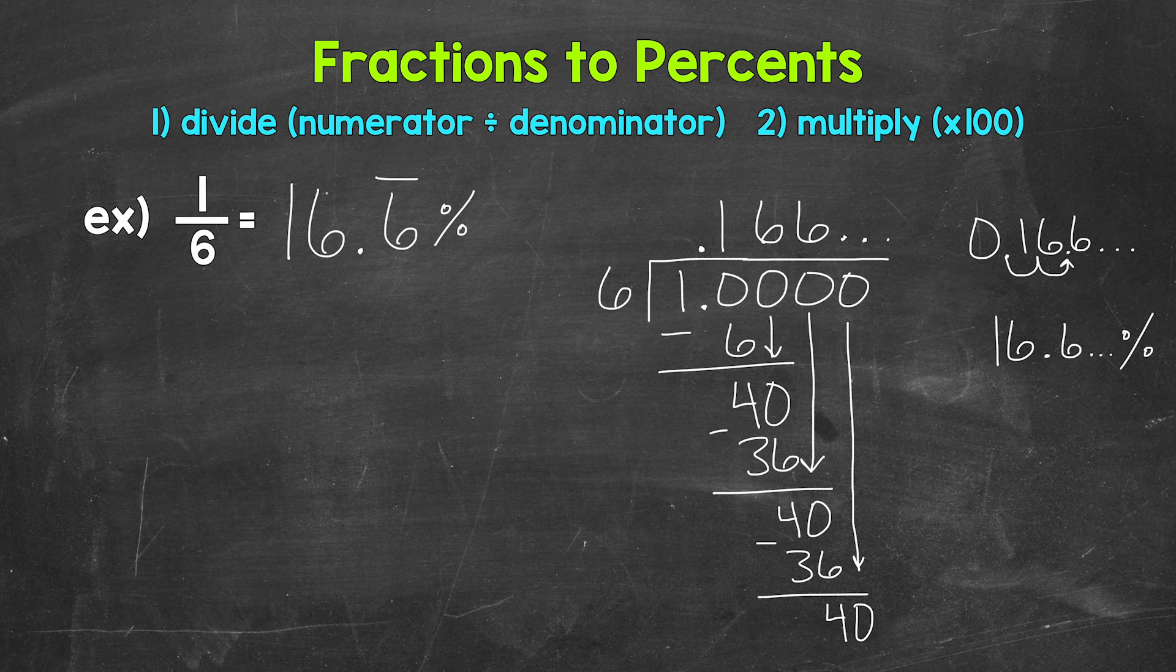So 1/6 equals 16.6 repeating percent. Now, another option as far as writing out repeating decimals as percents is to round. And we can round to whatever place we would like. But for this example, let's round to the tenths place and the nearest whole percent. Let's start with the tenths place.